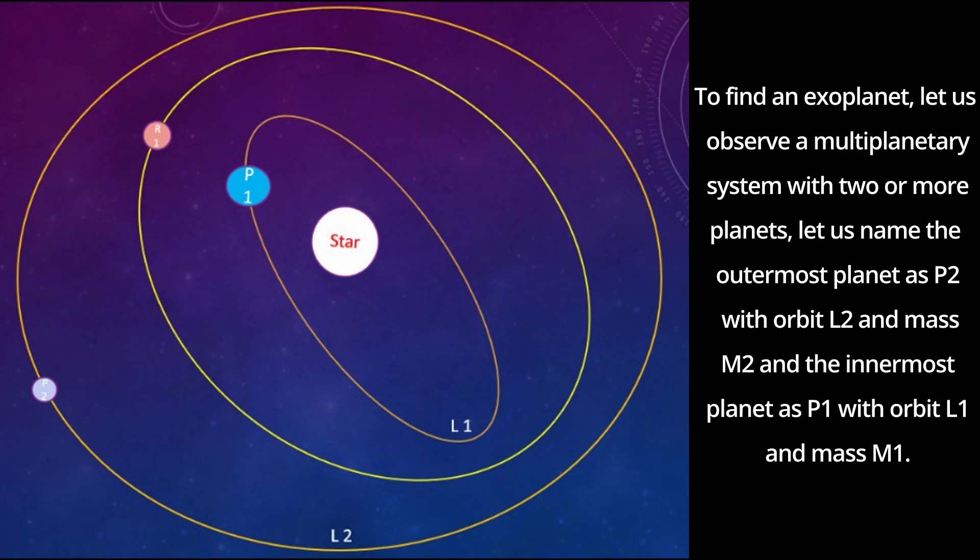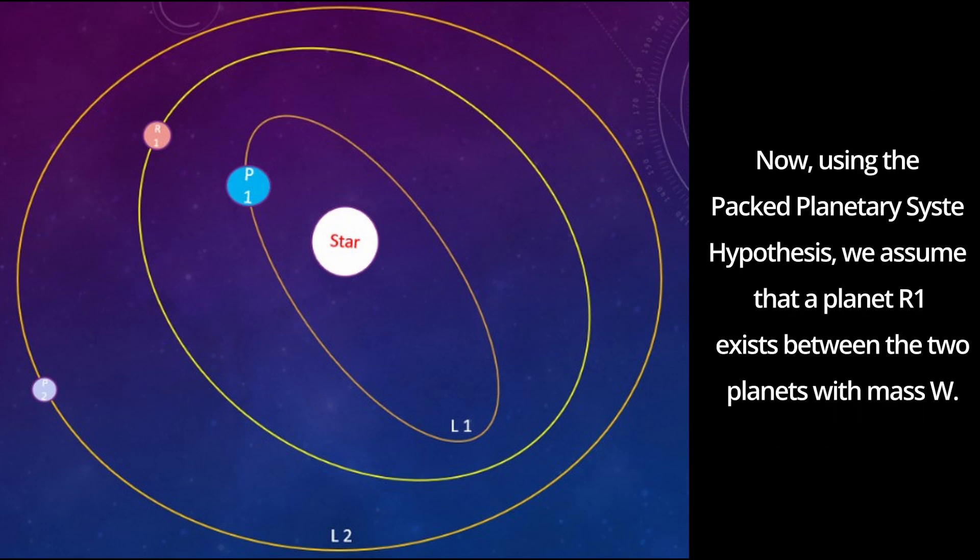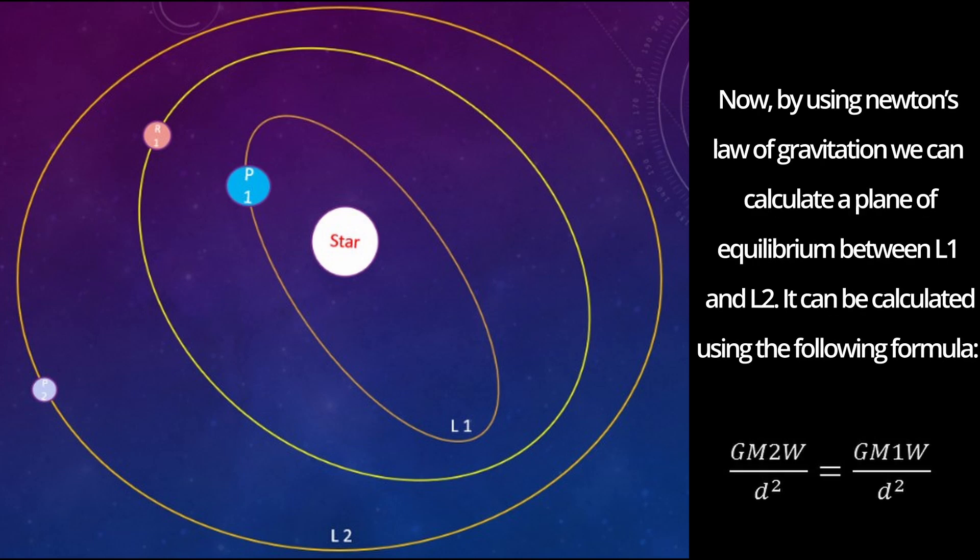First we need to find the data of an existing multi-planetary system and then do the following steps to check if the presence of a planet is possible within that or not.